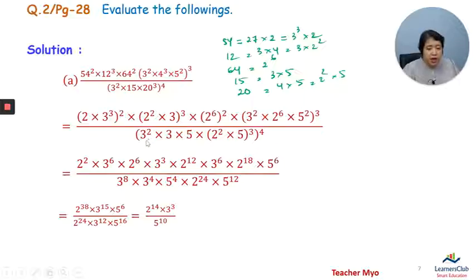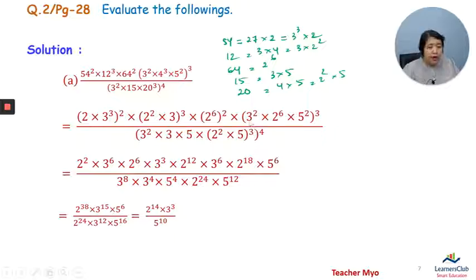Outputs are 3 squared, 15 times 3 multiplied with 5, and 20 cubed — 2 squared into 5 to the power 3.